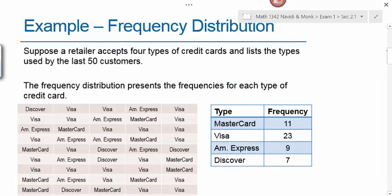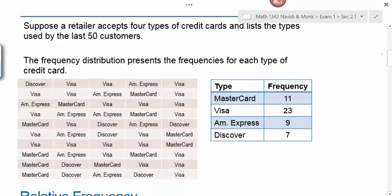Suppose a retailer accepts four types of credit cards and lists the types used by the last 50 customers. The frequency distribution presents the frequencies for each type of credit card. So here's the raw data in this table right here. And this is hard to just look at and glean any kind of information from. But if we were to organize this information into this frequency distribution, it's easier to get useful information out of here.